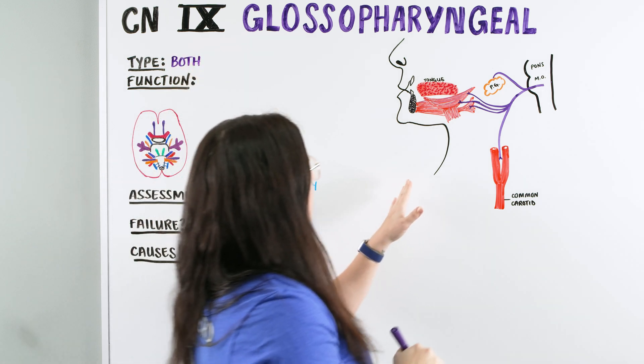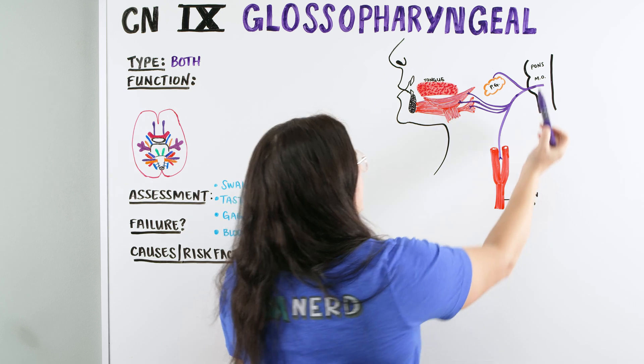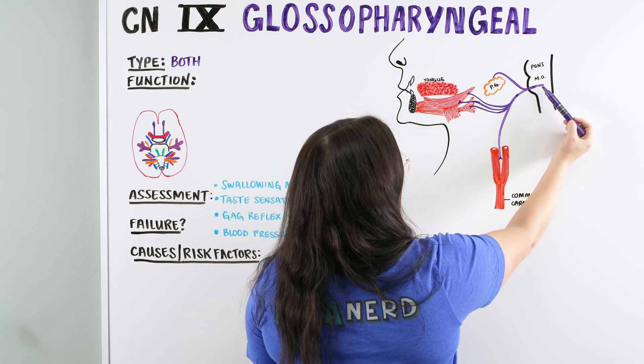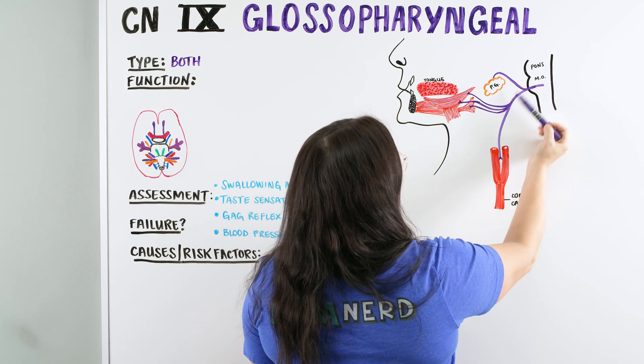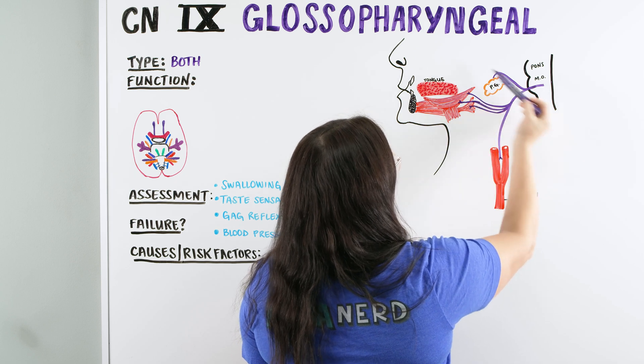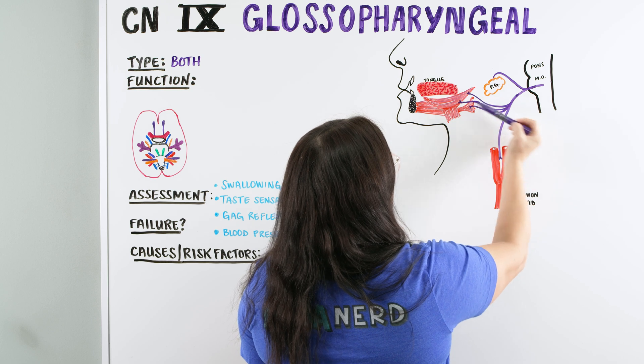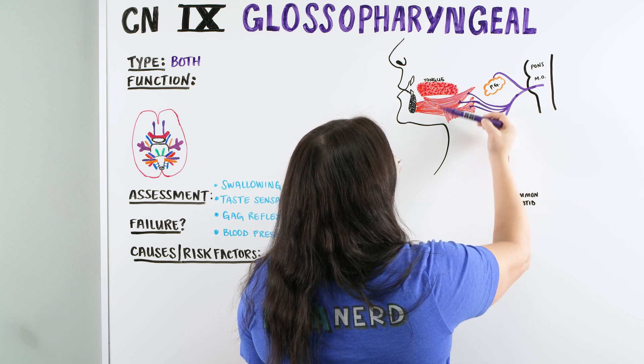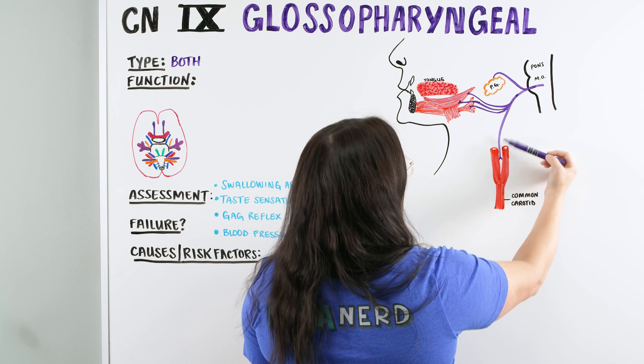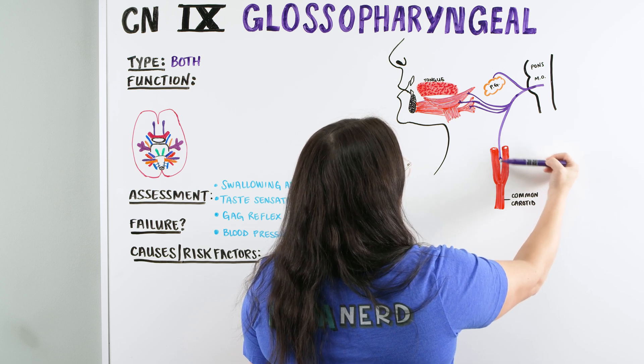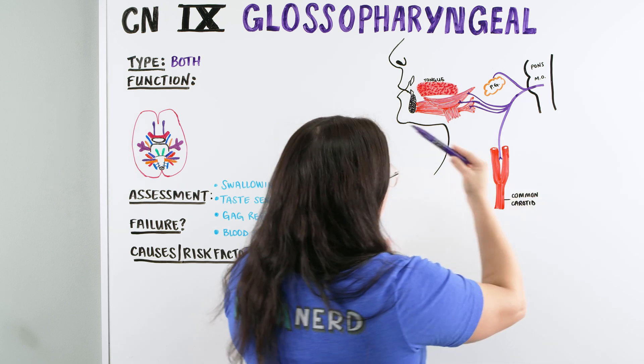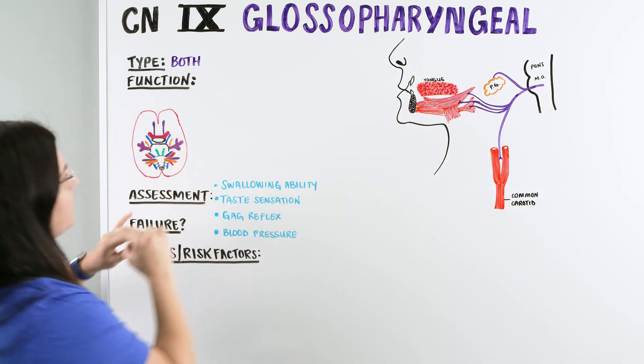As we look at the diagram here of the glossopharyngeal nerve, we can see that we have the pons and the medulla oblongata, and we have the nerve coming on out. It's got a couple different branches going to different areas. We can see that it's going to the parotid gland here, down over into this area to these pharyngeal muscles, and then also coming down to the carotid to get some of those receptors. We're going to go through really quickly and just mention all of the different types of functions.